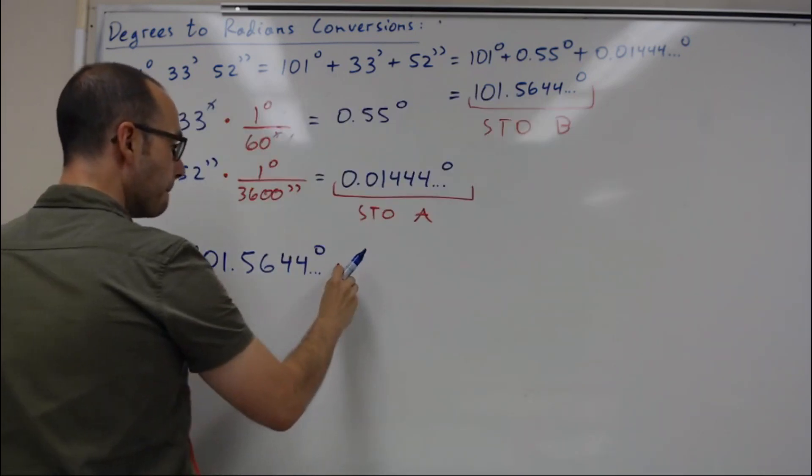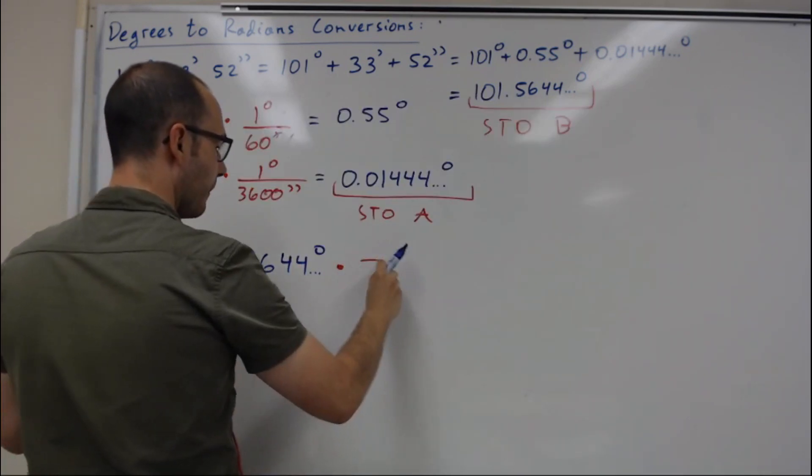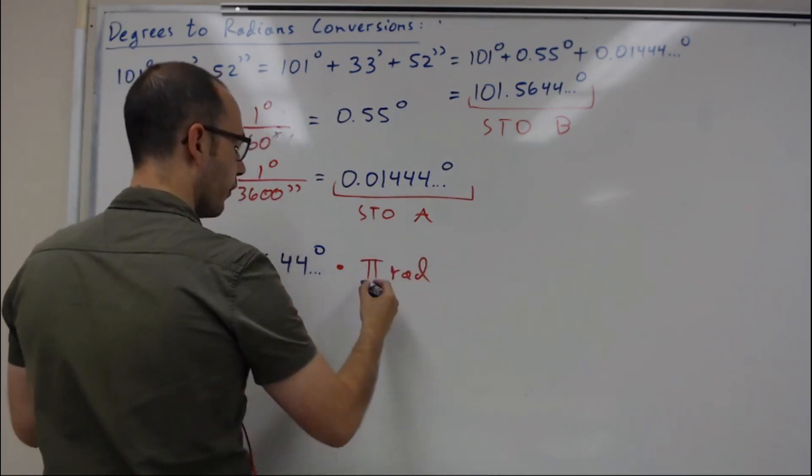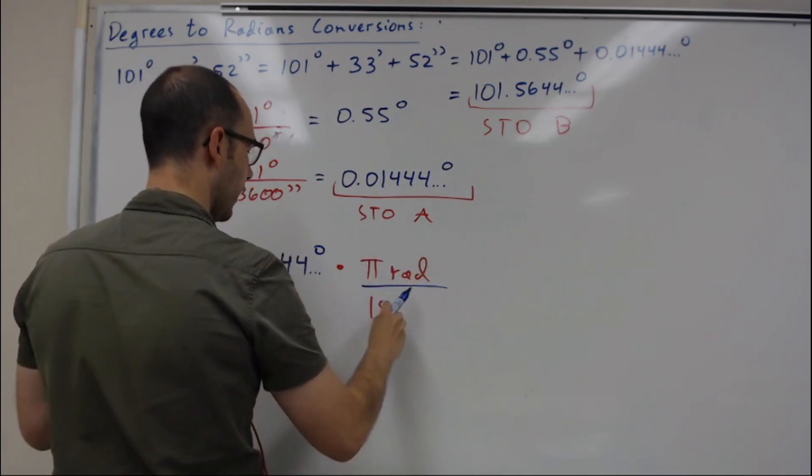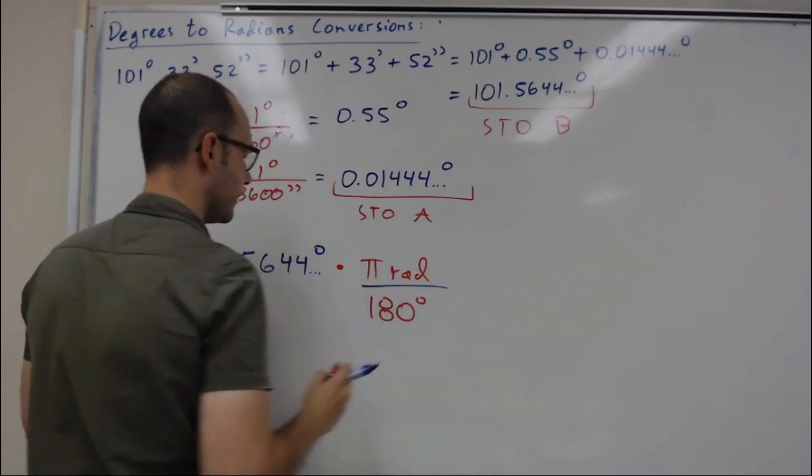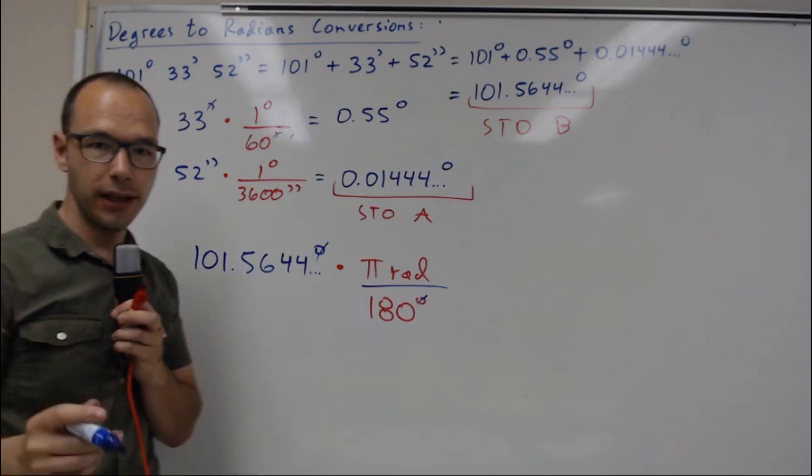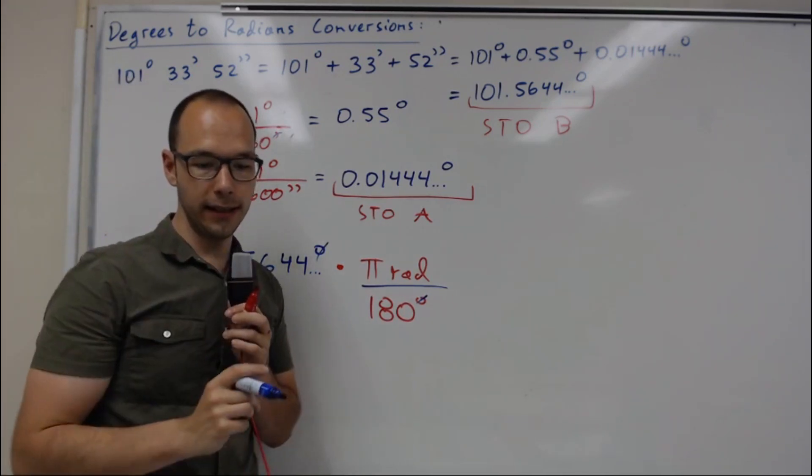And you will multiply that by pi radians over 180 degrees. And this will cancel out the degrees and you will be left with radians.